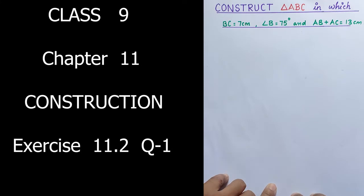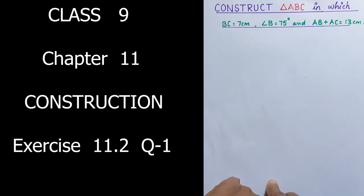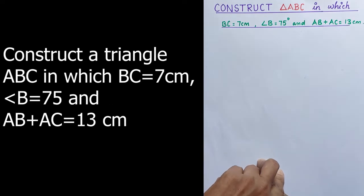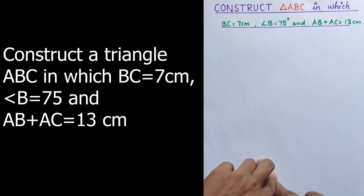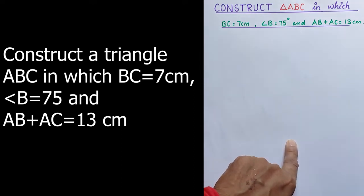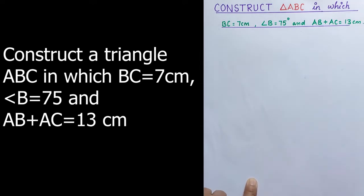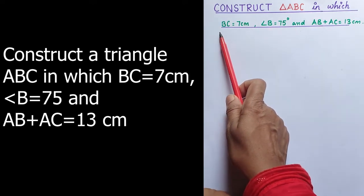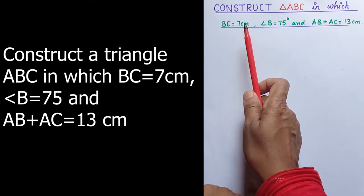Hi students, today we will discuss Class 9 Chapter 11 Exercise 11.2 Question number 1. The question is: construct triangle ABC in which BC equals 7 centimeter, angle B equals 75 degree, and AB plus AC equals 13 centimeter.